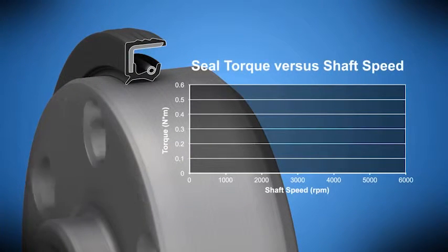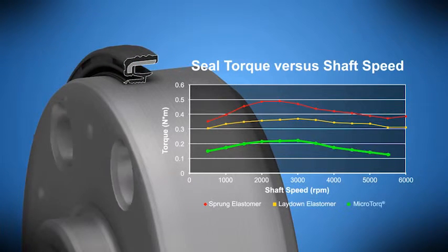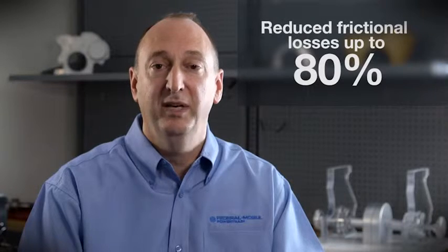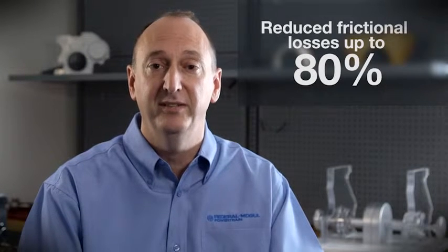Friction losses of dynamic seals can be quantified on bench test by measuring the drag or the torque of the seal against the shaft. We've been able to show through our bench testing that Microtorque achieves an 80% reduction in these friction losses versus competitor technologies.